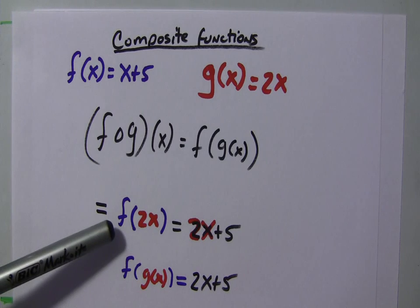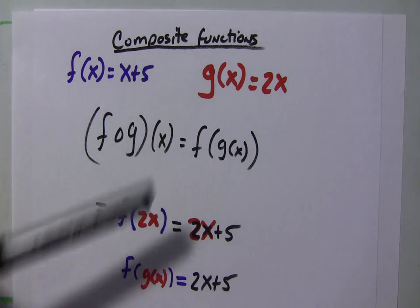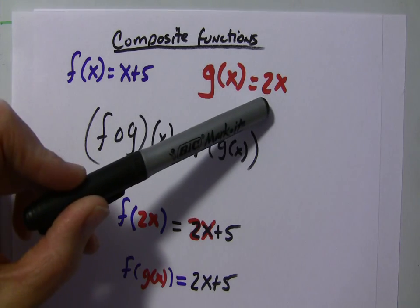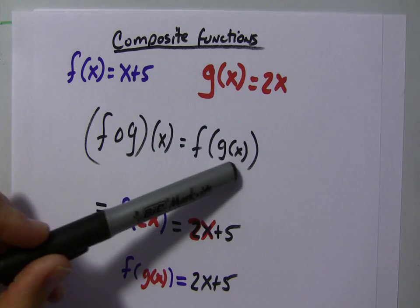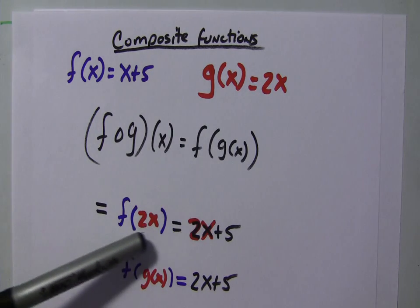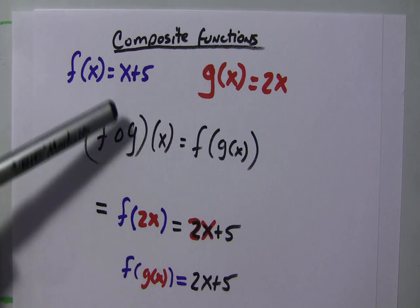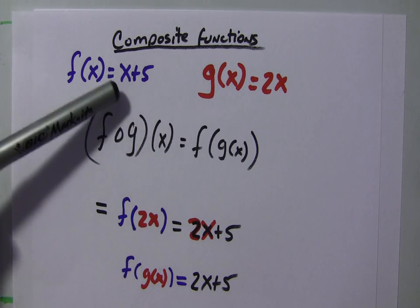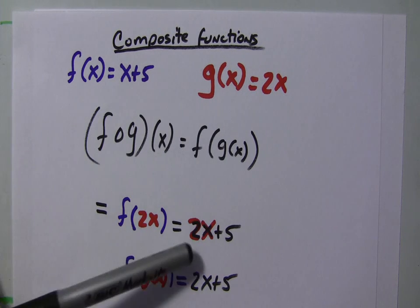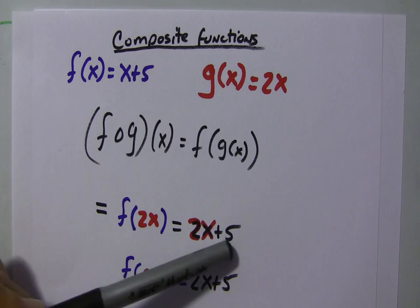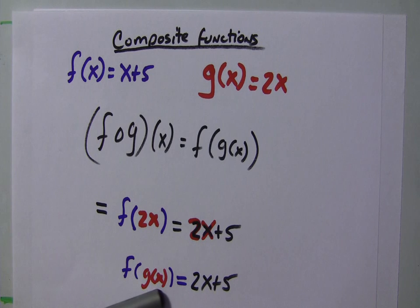Well, this is the function of g of x, and g of x is 2x. So, where we see g of x here, I can put 2x in, because that's g of x. So, the function f of 2x is, I'll put 2x in for x, and I get 2x plus 5. So, f of g of x equals 2x plus 5.